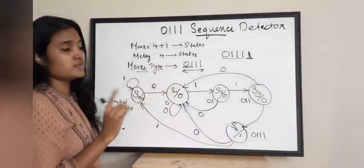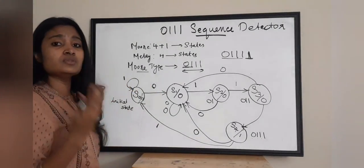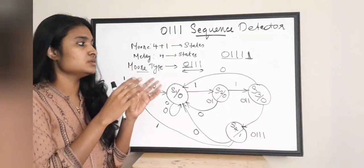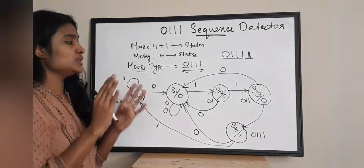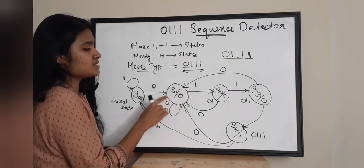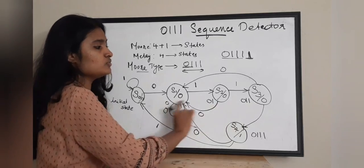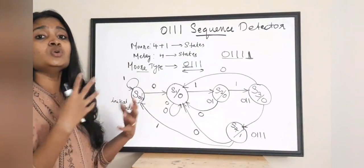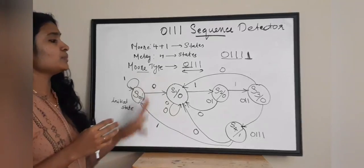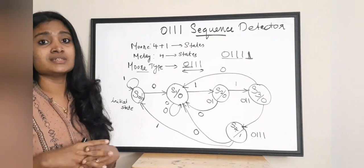We have discussed all cases with all states — receiving zeros and ones in every state. The key is to think whether your sequence has broken, or whether you can proceed further with the pattern you have at each state. Write the sequence you have at each state below each state circle — for example, S1 has 0, S2 has 0 1, S3 has 0 1 1. This helps you think clearly without getting confused. This is the Moore type state diagram for a 0 1 1 1 sequence detector.